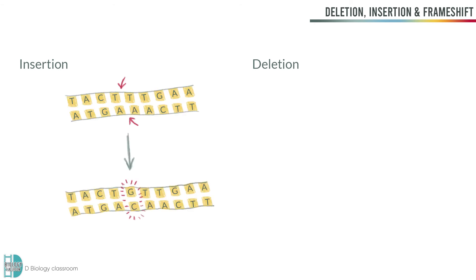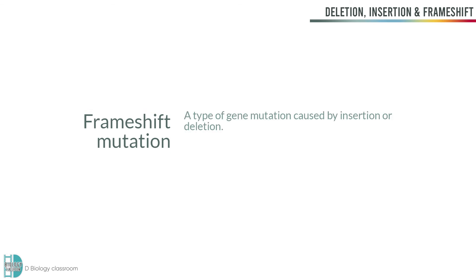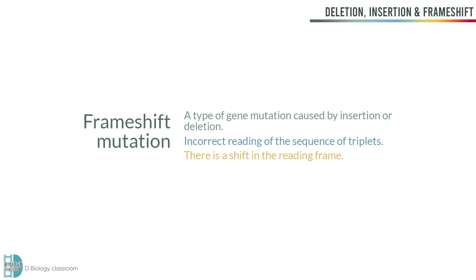Insertion and deletion are mutations in which extra base pairs are inserted into a new place in DNA, or are being removed. This might result in frameshift mutation. Frameshift mutation is a type of gene mutation caused by the insertion or deletion of nucleotides, causing incorrect reading of the sequence of triplets in the genetic code due to a shift in the reading frame.